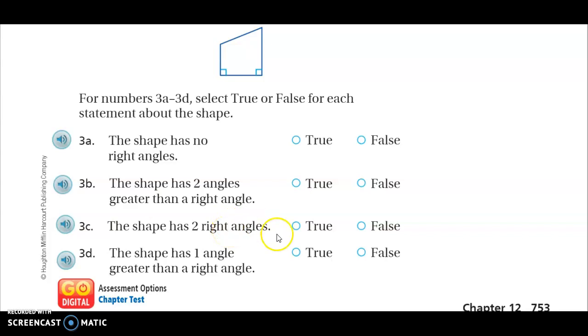3C, the shape has two right angles. True or false. D, the shape has one angle greater than a right angle. So press pause and work on that.